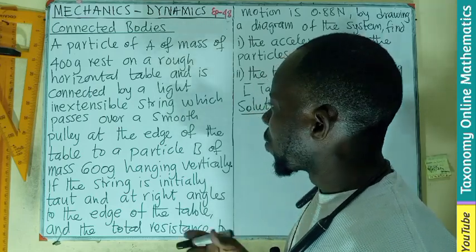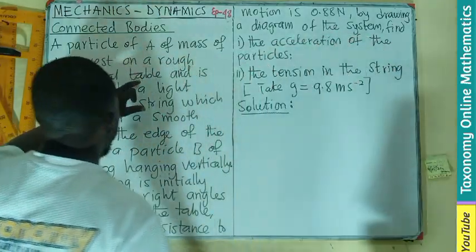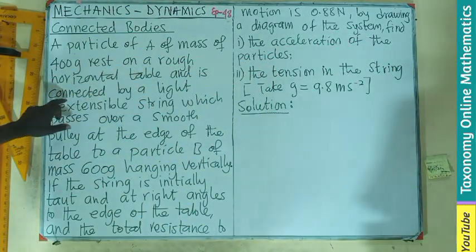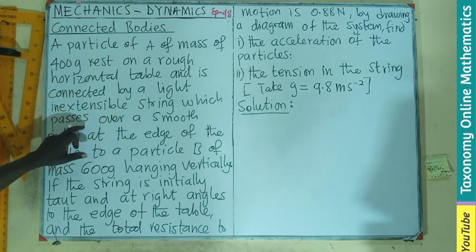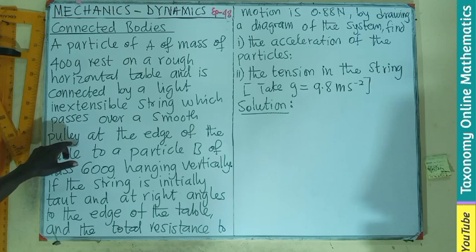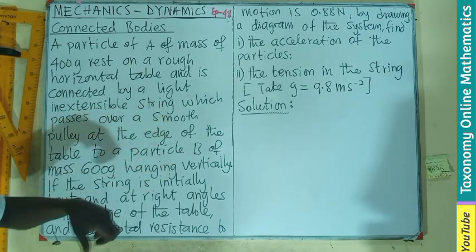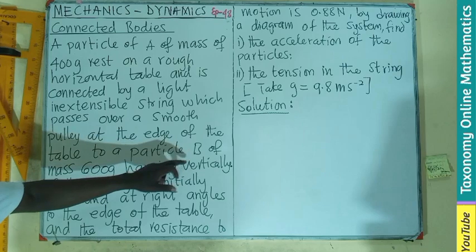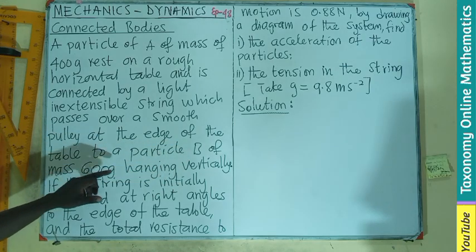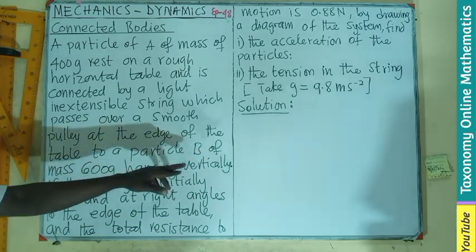So a particle A of mass 400 grams rests on a rough horizontal table and is connected by a light, inextensible string which passes over a smooth pulley at the edge of the table